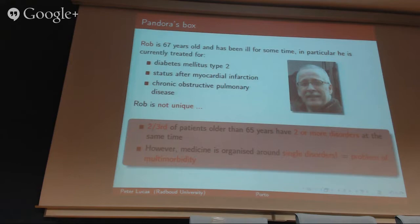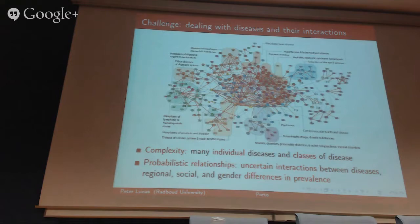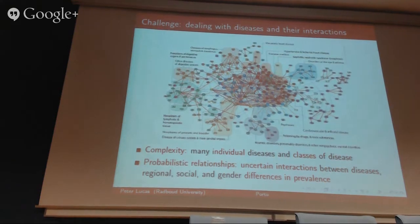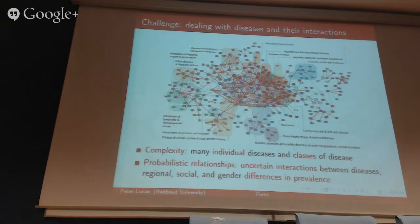That's really the topic of my talk: I want to focus on this specific problem. Rather than looking at single diseases, we are actually dealing with a rather complicated network of diseases, which appears to be extremely complex — and what I'm showing is actually just a small part of the whole network. Given this highly complicated structure, you could try to organize it in terms of classes of diseases, indicated by different areas.